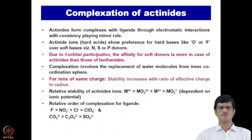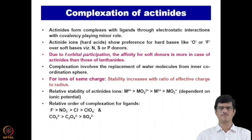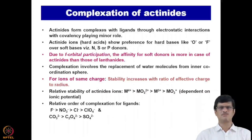For ions of the same charge, the stability increases with the ratio of the effective charge to radius — that is, the ionic potential. So the heavier actinides will have stronger complexation than the lighter actinides. For the different ionic species — +3, +4, +5, and +6 — represented as M³⁺, M⁴⁺, MO₂⁺, and MO₂²⁺ respectively — the relative stability order is: M⁴⁺ > MO₂²⁺ > M³⁺ > MO₂⁺.